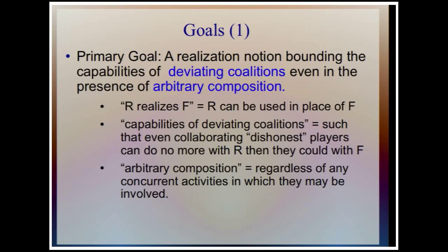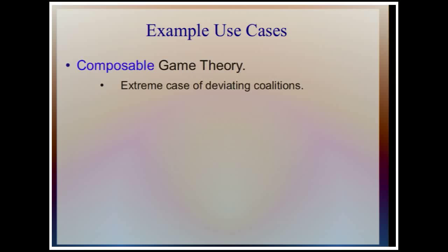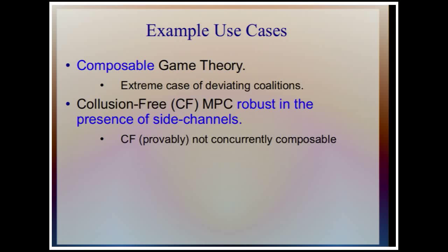Arbitrary composition means this should hold regardless of what other concurrent activities are going on at the same time. Why are we interested in this? For example, composable game theory — this is an extreme case of considering coalitions of deviating parties. Essentially there are no honest parties in game theory; everybody's rational, doing whatever they want. Another case is performing collusion-free computation that's robust even in the presence of side channels, which we'll see is a real problem.